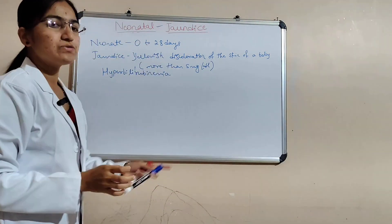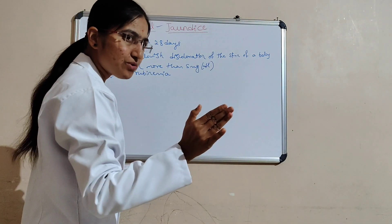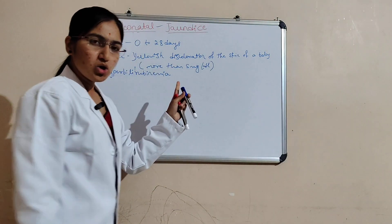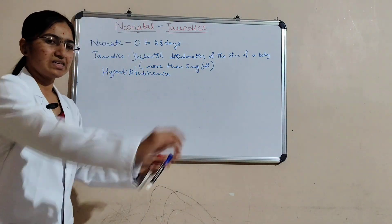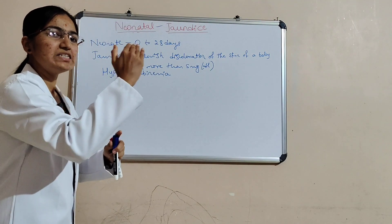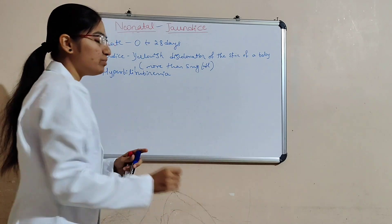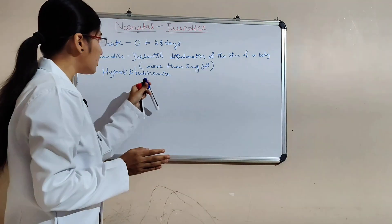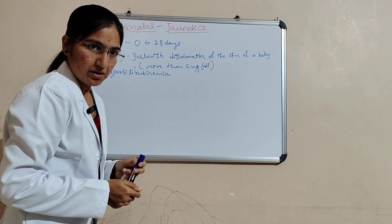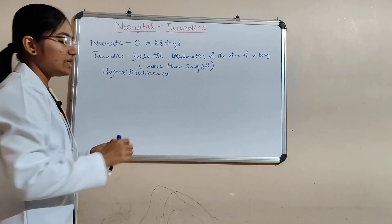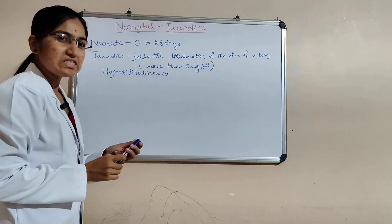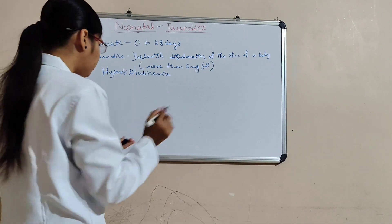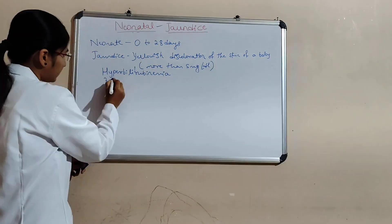So in a neonate — the first 28 days of life of a newborn — jaundice is the yellowish discoloration of the skin of a baby. When the bilirubin level exceeds more than 5 mg per dL, that is hyperbilirubinemia. There are two types: one is conjugated and another one is unconjugated.